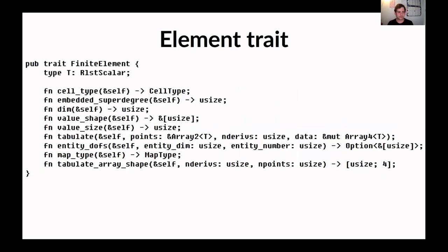I'm going to talk about how we've designed the traits for elements. Anyone familiar with finite elements should find this reasonably familiar. This is what our element trait looks like. It has one type, which is the scalar type — maybe F32 or F64 — as our value type when evaluating the element. It has the things you'd expect a finite element to have. For anyone who doesn't do finite elements, essentially a finite element is a way of defining polynomials over each cell in the mesh — piecewise polynomials in each triangle.